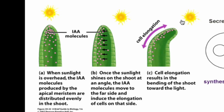It's almost like running around a track — the inside part is shorter than the outside. So if the side of the plant shoot away from the sun grows faster, that causes it to curve towards the sunlight. Pretty cool.